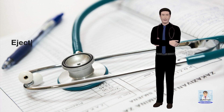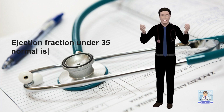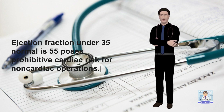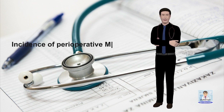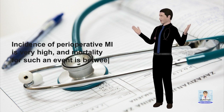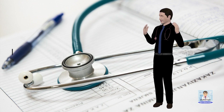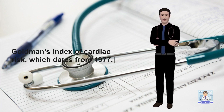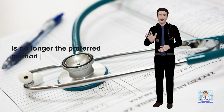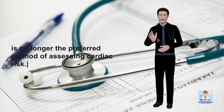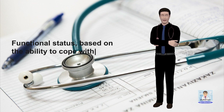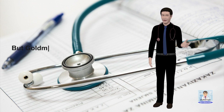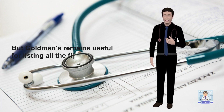Regarding cardiac risk: an ejection fraction under 35% (normal is 55%) poses prohibitive cardiac risk for non-cardiac operations. The incidence of perioperative MI is very high, and mortality for such an event is between 55 and 90%. Goldman's index of cardiac risk, dating from 1977, is no longer the preferred method; functional status based on the ability to cope with life's demands is more commonly used now.